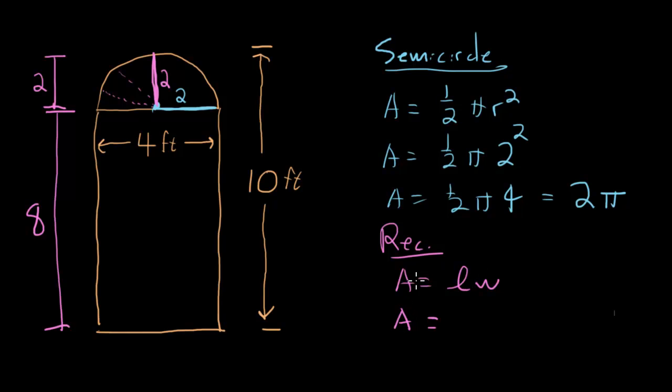Area of the rectangle is length times width. And we now know that that is 8 times 4, which is 32.